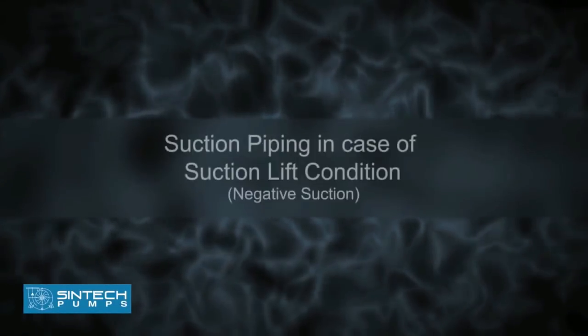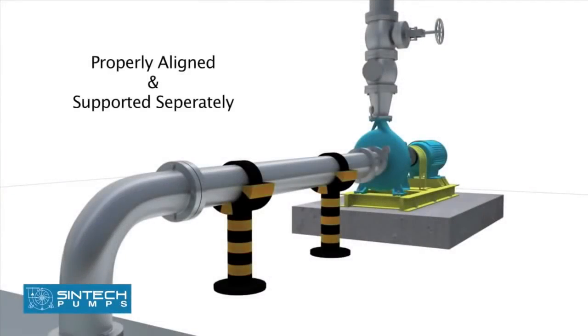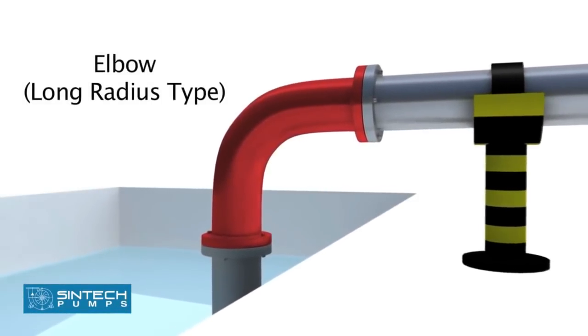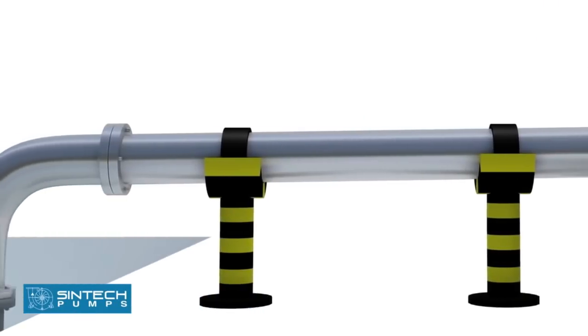Suction piping in case of suction lift condition (negative suction): The piping drum and the connection fittings should be properly aligned and supported separately. The elbow should be of long radius type. All suction piping must be airtight.